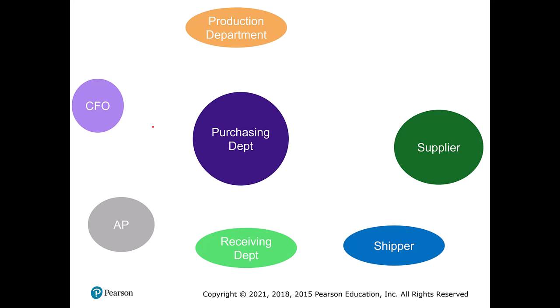We can break this down by departments. We start with the production department — they're making some item and need more raw supplies or materials, so they talk to the purchasing department. Why not just order it themselves? In most organizations we centralize purchasing decisions because it's better to have people focus full time on a task. Production is great at making things but has different priorities and skill sets. Purchasers spend their whole time trying to get the best possible price on a good.